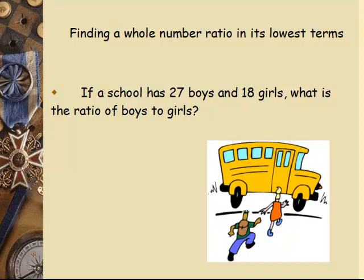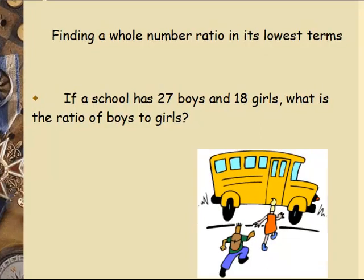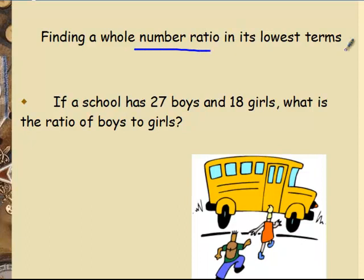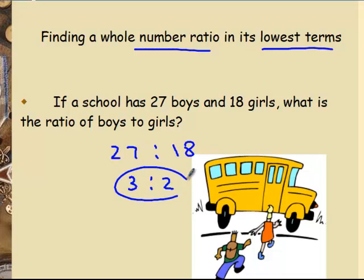What about this one? If a school has 27 boys and 18 girls, what is the ratio of boys to girls? Notice the title now says finding a whole number ratio in its lowest term. So now we actually do want to find it in its lowest term. We recognize here perhaps that they're both multiples of 9. So if you divide them both by 9, you get a 3 to 2 ratio. Now that's whole number and it's lowest term.